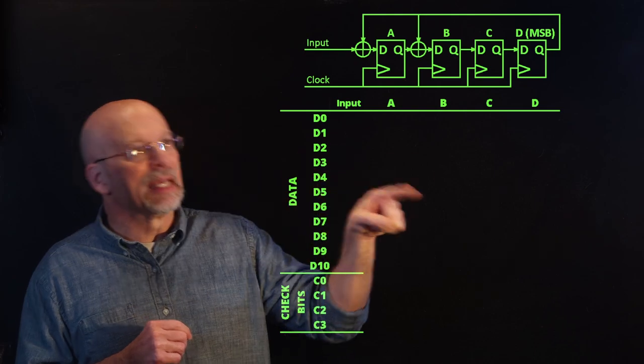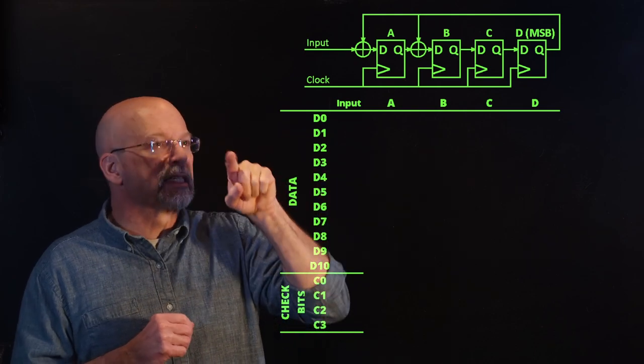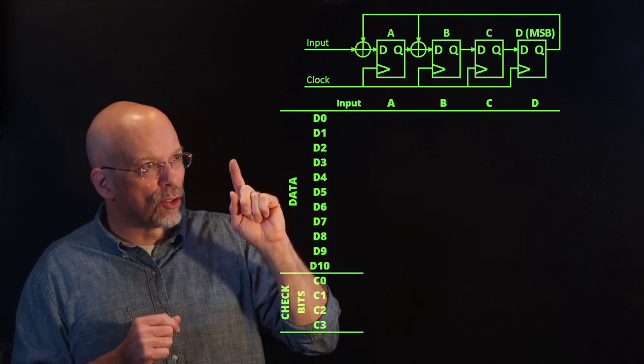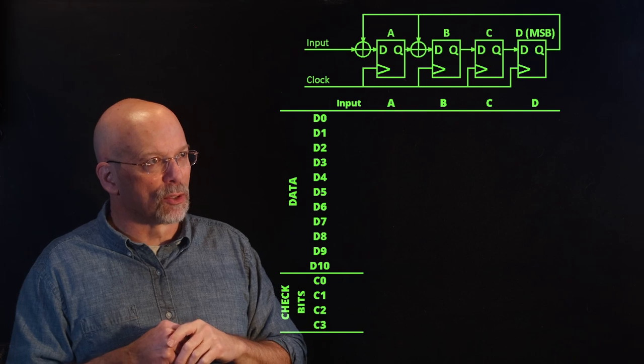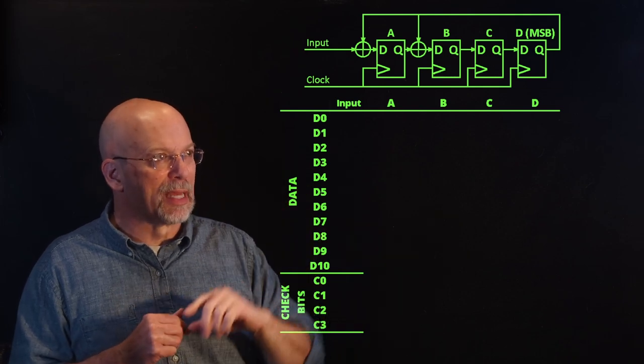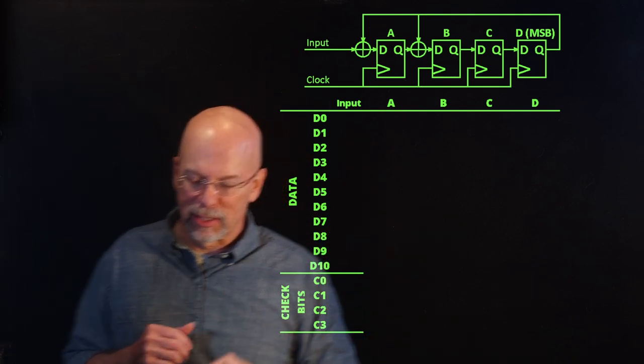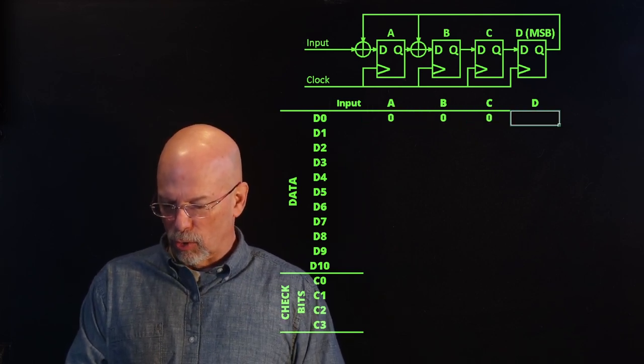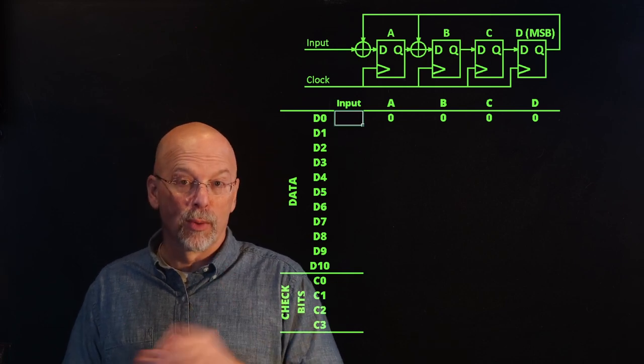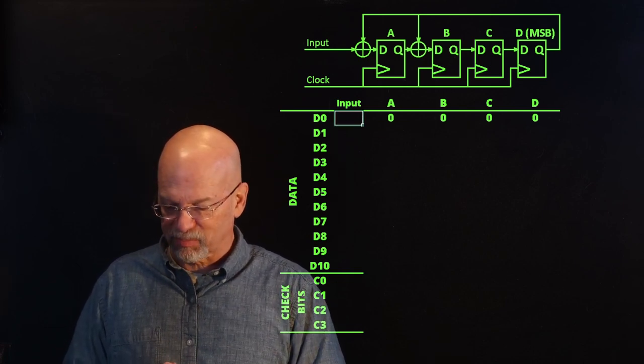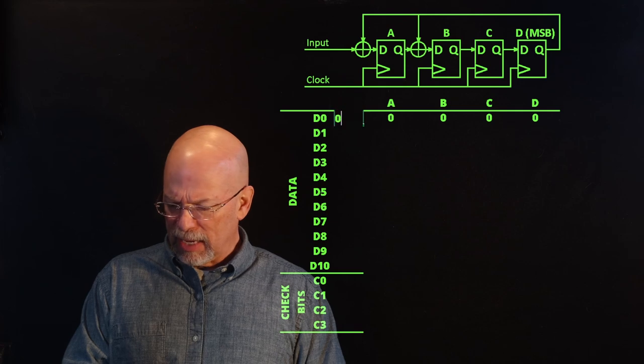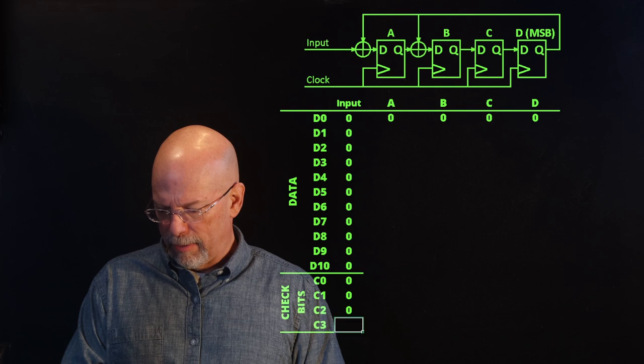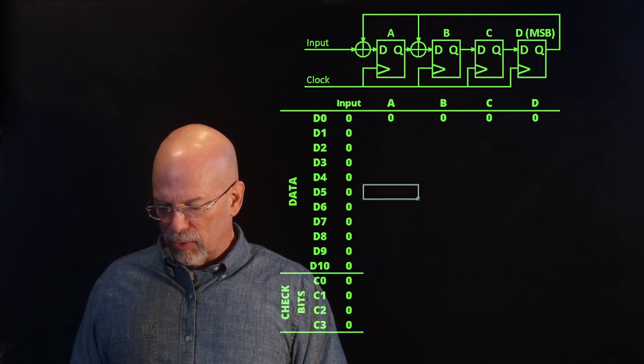We've got the most significant bit, D, getting looped around so that it is getting exclusive ORed with the input to go into A, and then B is driven with the exclusive OR of the output of A and the most significant bit, D, coming out of this shift register. We are going to initialize this shift register with all zeros. That's the way we started out whenever we were generating the CRC. And I'm going to create an input stream, which is just a bunch of zeros at this point, all right? And then my check bits are also zeros.